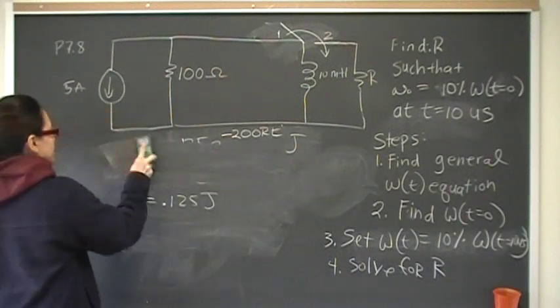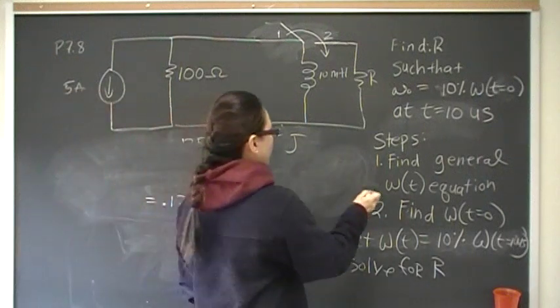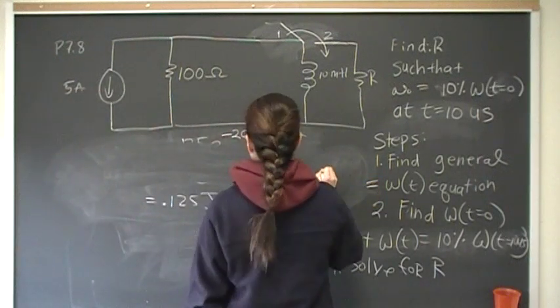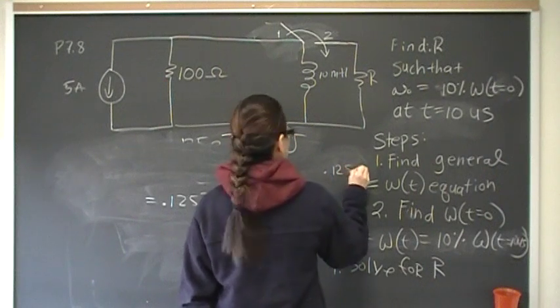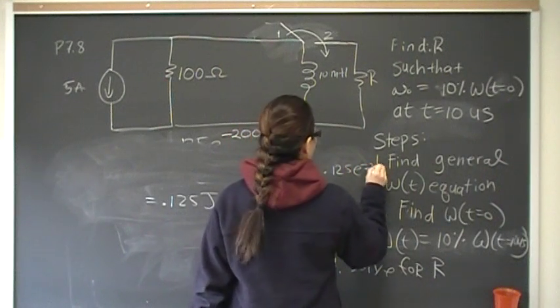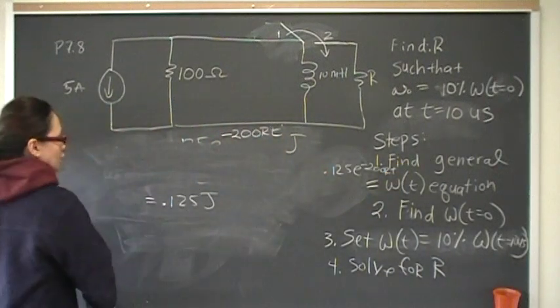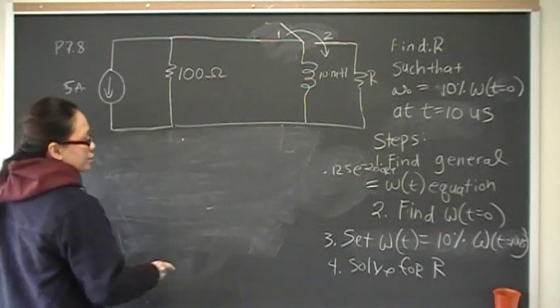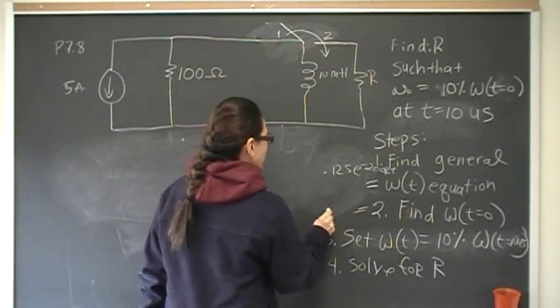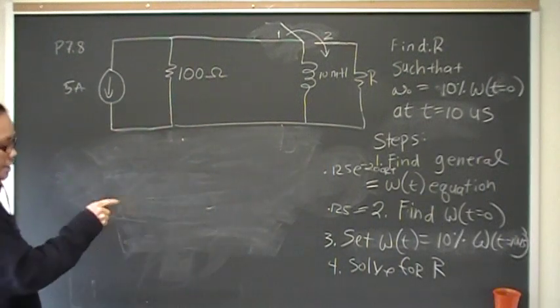Now, the other piece of the puzzle is, actually, I need to park that equation over here, because I need to come back to it. 0.125 E to the negative 200 R T joules. Okay, so at times 0, I have 0.125, so at times 0, that's equal to 0.125. And I need to find, I want to find what 90% or 10% of my energy is left.